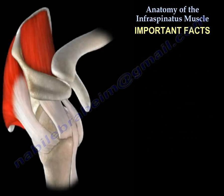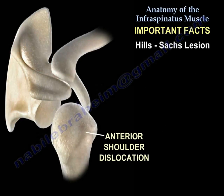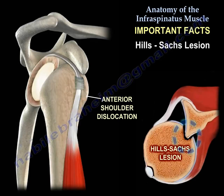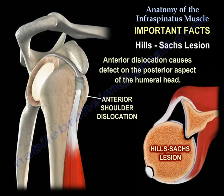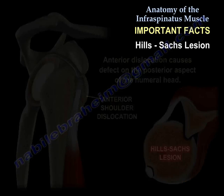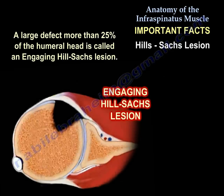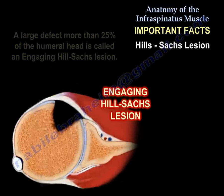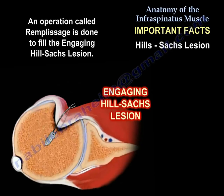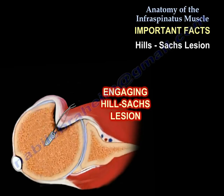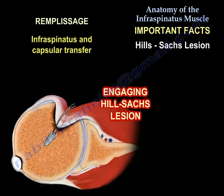Another area where the infraspinatus may be involved is the Hill-Sachs lesion. When the shoulder dislocates anteriorly, the Hill-Sachs lesion is usually posteriorly on the head of the humerus. When you have a defect in that head greater than 25%, this is called an engaging Hill-Sachs lesion. An operation called remplissage is utilized to fill that defect — it is an infraspinatus and capsular transfer. The Hill-Sachs lesion is filled with the posterior capsule and by tenodesis of the infraspinatus tendon to reduce the risk of osseous engagement.